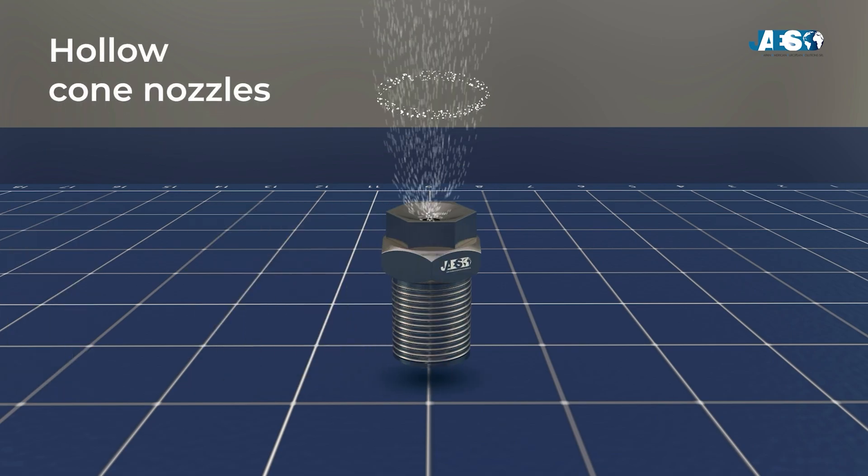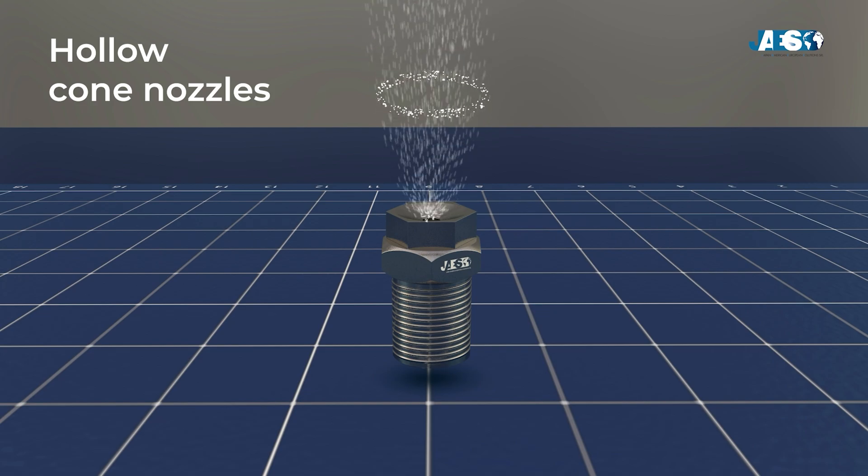Hollow cone nozzles have a ring shaped spray. They're used in humidification and precise circular coverage.